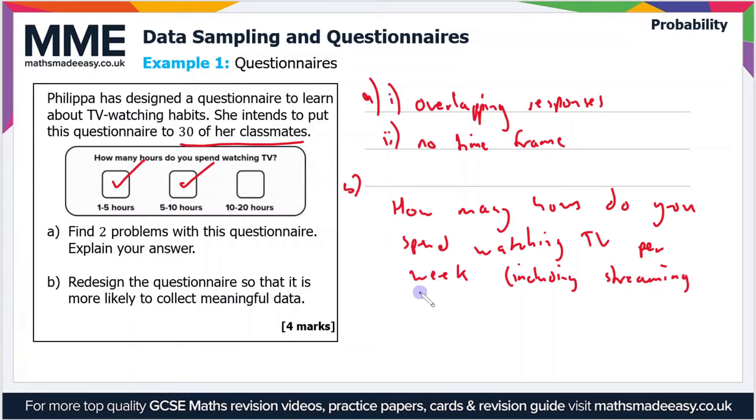Okay, so that's a much more clear question, if you'll excuse my handwriting, and then we need some response boxes. So the original questionnaire had three. I'm going to include four here because the more you have, the better. And now we need to have an option first of all for people who don't spend any time watching TV. So let's say our first option is going to be zero to four hours.